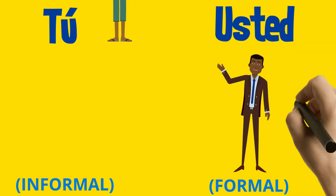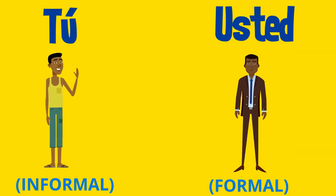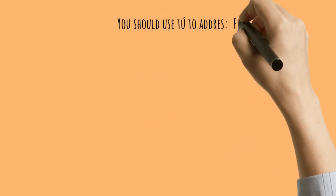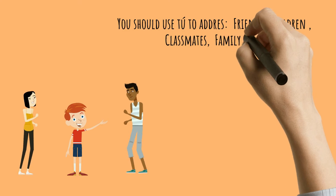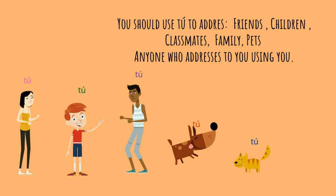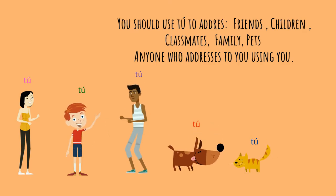Tú — it kind of sounds a little bit like 'you.' Tú is informal and usted is formal you. Whenever you want to address somebody as 'you' in an informal manner, you would use tú. You should use tú to address your friends, younger children, your classmates, your family, pets, or anyone who addresses you informally. If you feel comfortable with your friends and they're about the same age as you, you would use tú.